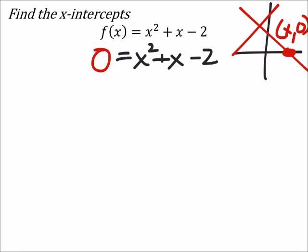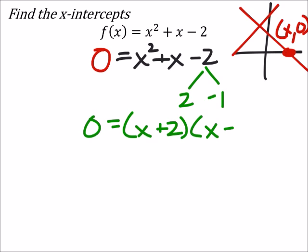Here's the great news on this one, is this one is factorable, so we don't necessarily need the completing the square stuff. And what I get is a 2 and a negative 1. So I got 0 equals x plus 2, and x minus 1, and we're just solving for x so that we get 0 to make this statement true.